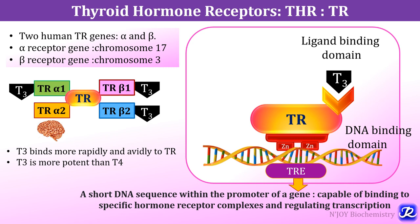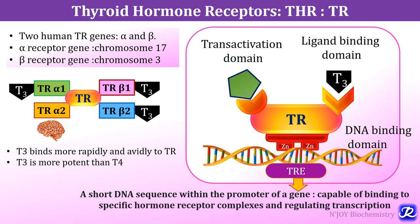In addition to the ligand binding domain and DNA binding domain, the thyroid receptor also has a trans activation domain. To this trans activation domain, a co-repressor is bound and this transcription complex is repressed. When the trans activation domain is bound to an activator, the transcription is activated.